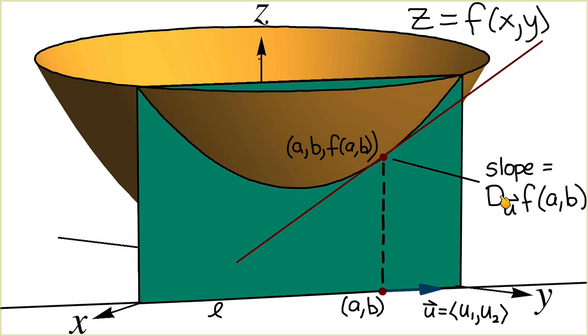The slope of this line is the directional derivative of f at (a,b) in the direction of u. So when we calculate the directional derivative of f at the point (a,b) in the direction of u, we are calculating the slope of a curve on the surface at the point (a,b,f(a,b)) in the direction of the vector u.